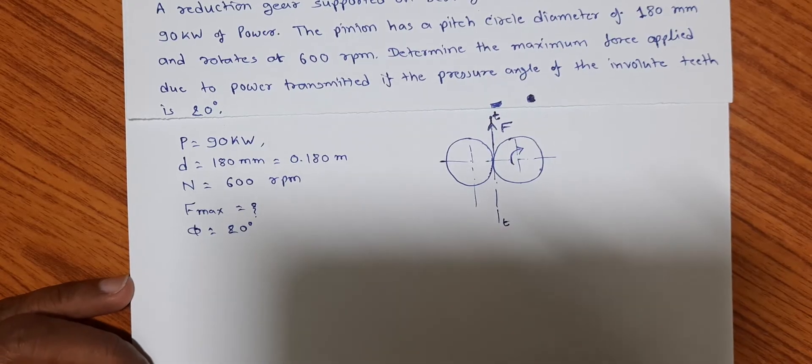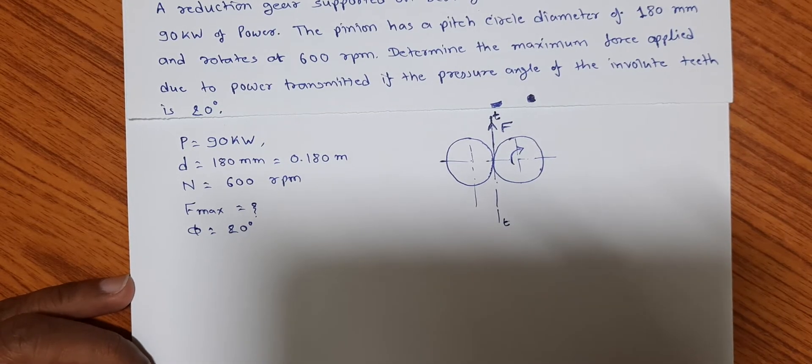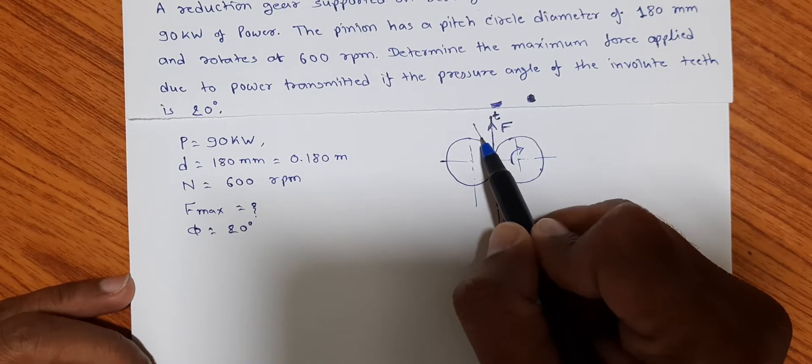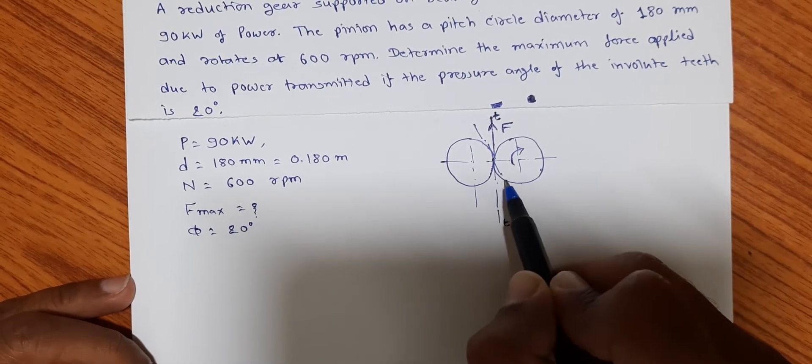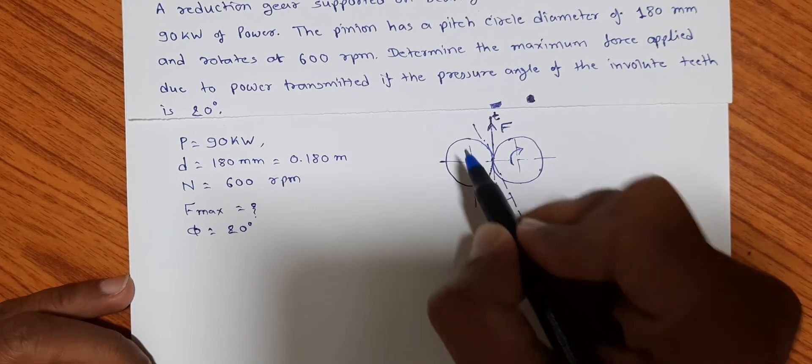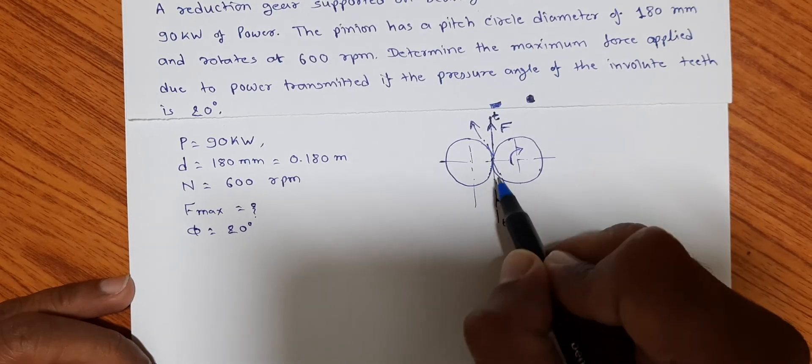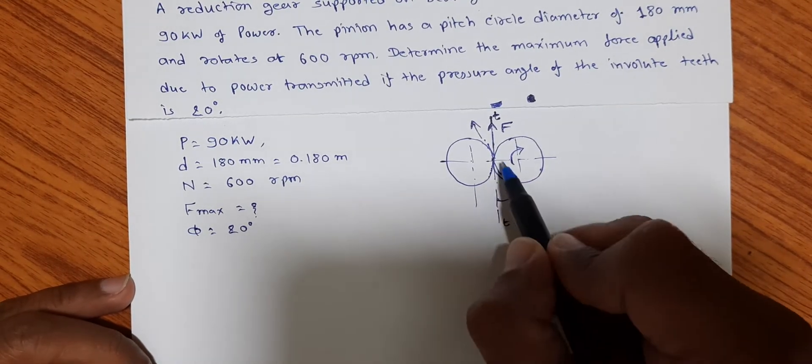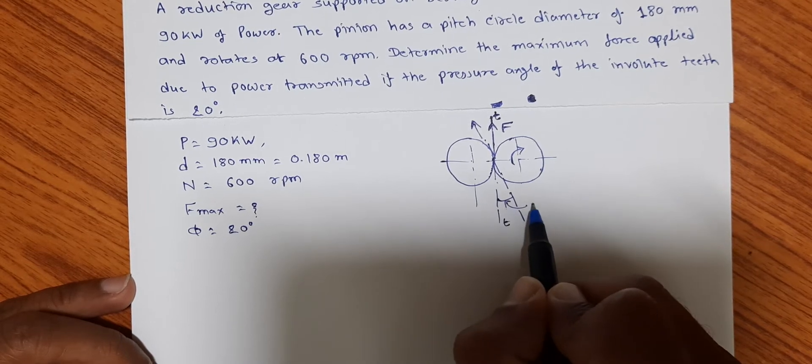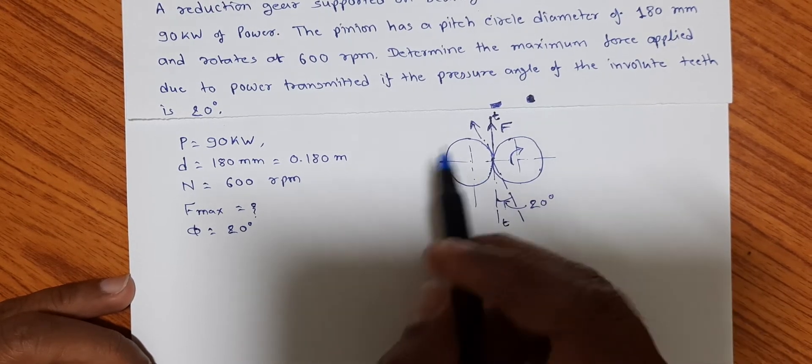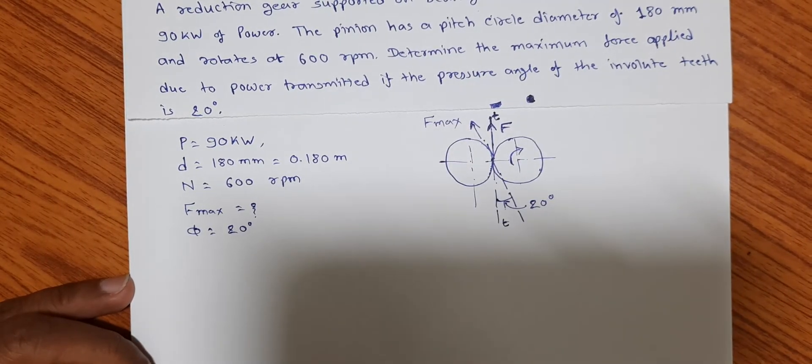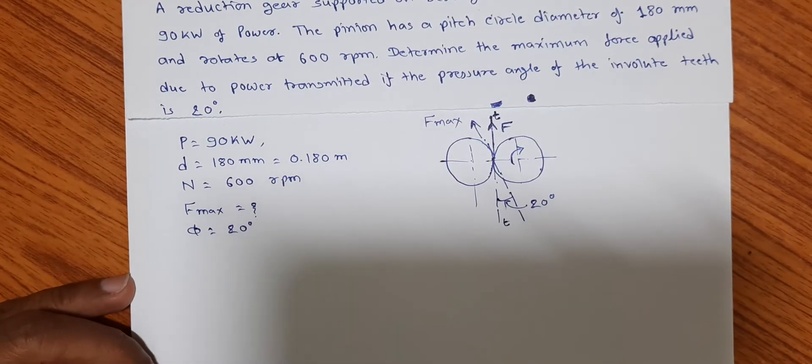And the maximum force will act along the line of action that is oriented at 20 degrees, as the pressure angle given is 20 degrees. So this is the line of action, we can also say the pressure line. And the angle is given 20 degrees, so here the force going to act is equal to F_max. So we have to find out this F_max.